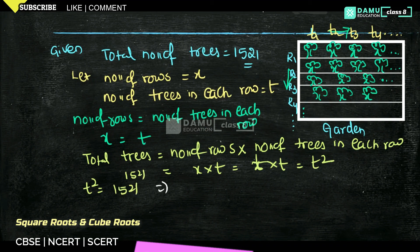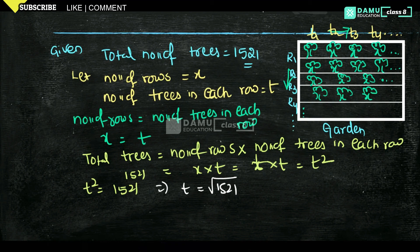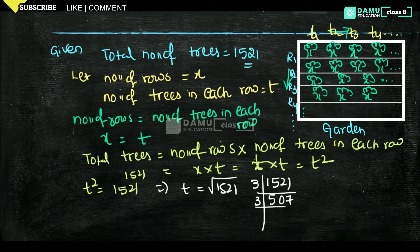That means if t squared equals 1521, moving the square to the other side gives t equals square root of 1521. Find the square root of 1521 using the prime factorization method. It will not go with 2, so it goes with 3: 3 times 507, then 3 times 169, then 13 times 13.